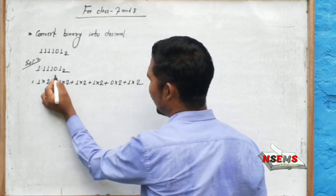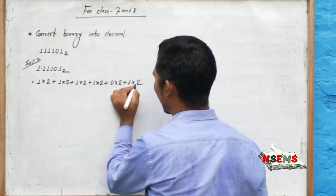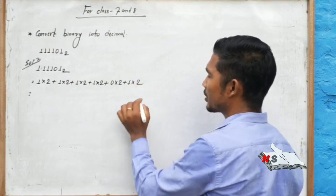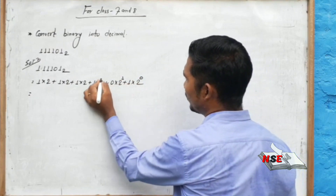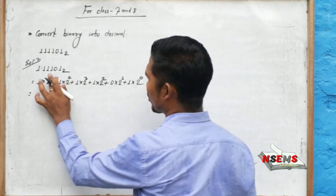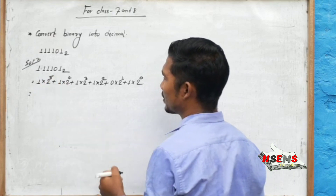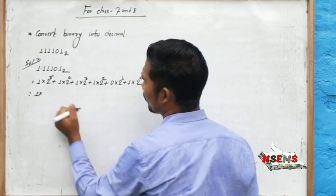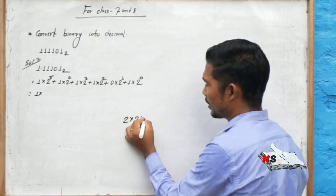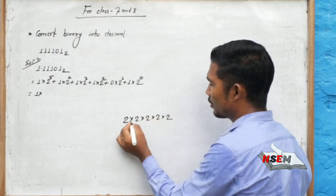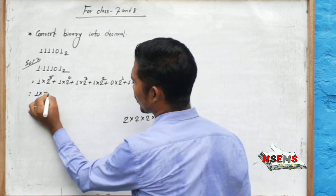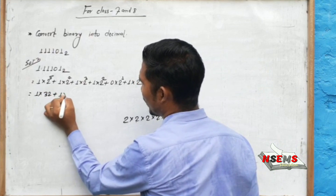Starting from the right, the powers go from zero upward: zero, one, two, three, four, five. So two power five equals thirty-two. Two times two is four, four times two is eight, eight times two is sixteen, sixteen times two is thirty-two.